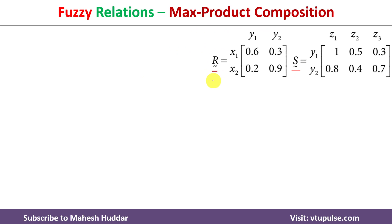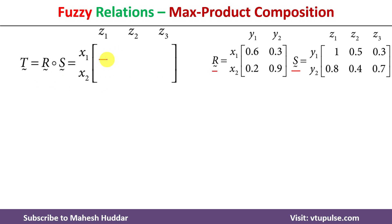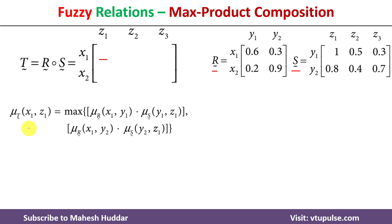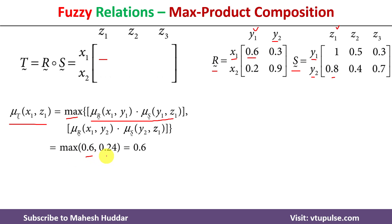Now for max-product composition on the same fuzzy relations R and S. The only difference from max-min is that instead of taking the minimum, we take the product. For the membership value of x1z1: x1 to y1 is 0.6, y1 to z1 is 1, so 0.6 × 1 = 0.6. Then x1 to y2 is 0.3, y2 to z1 is 0.8, so 0.3 × 0.8 = 0.24. The maximum of 0.6 and 0.24 is 0.6.